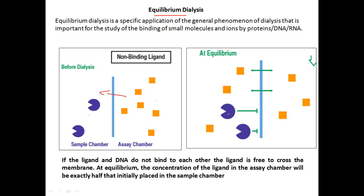If the ligand and DNA do not bind to each other, the ligand is free to cross the membrane. At equilibrium, the concentration of the ligand in the assay chamber will be exactly half of that initially placed in the sample chamber. The protein or DNA cannot pass through the membrane — only the ligand can. So at equilibrium, the concentration of ligand in the sample chamber and the assay chamber is the same.